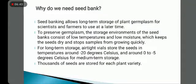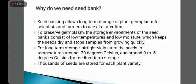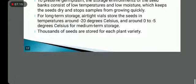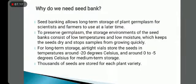Seed banking allows long-term storage of plant germplasm for scientists and farmers to use at a later time. The storage environments consist of low temperatures and low moisture, which keep seeds dry and stop samples from growing. For long-term storage, seeds are stored at around minus 20 degrees Celsius, and around 0 to 5 degrees Celsius for medium-term storage. Thousands of seeds are stored for each plant variety.